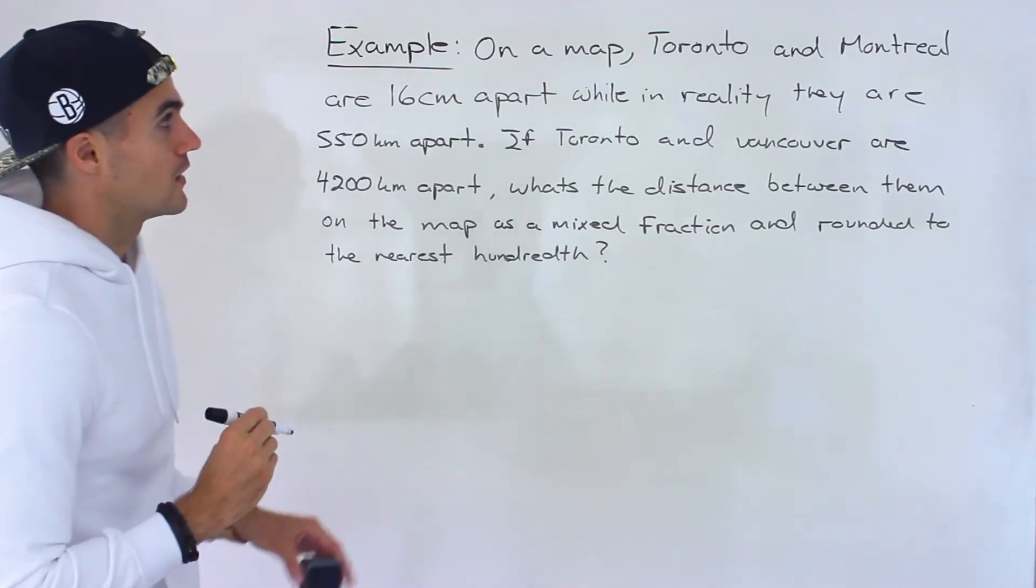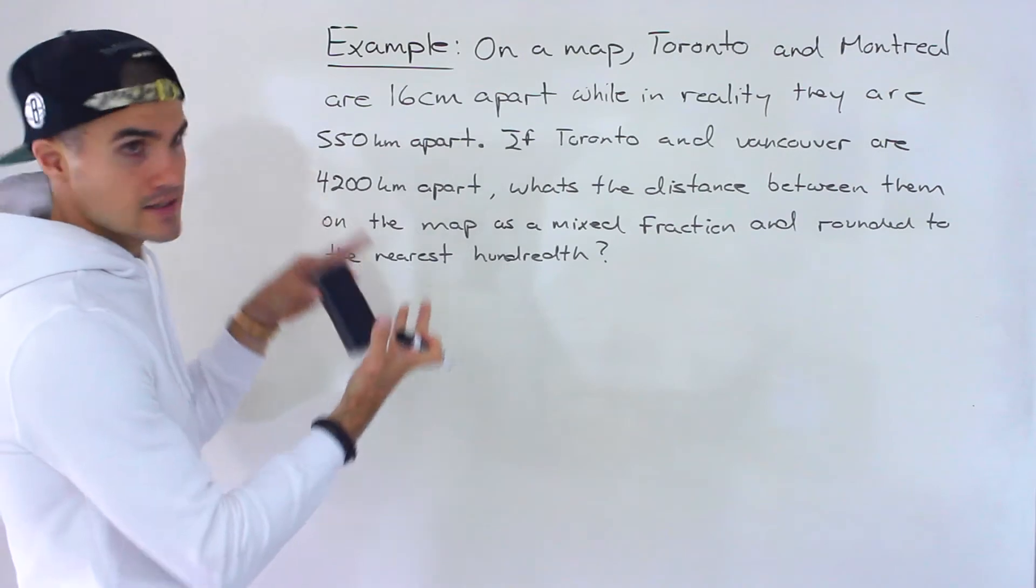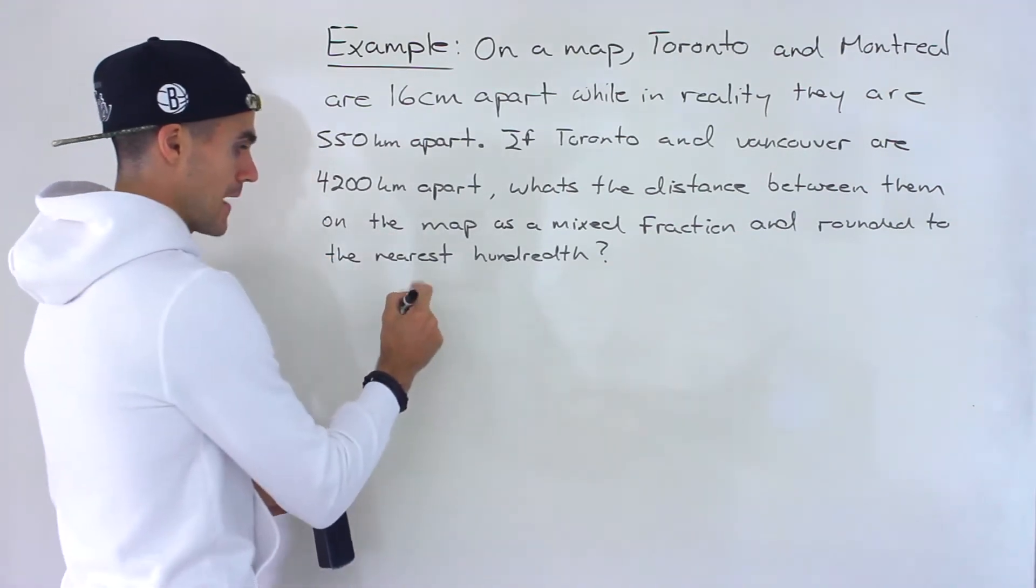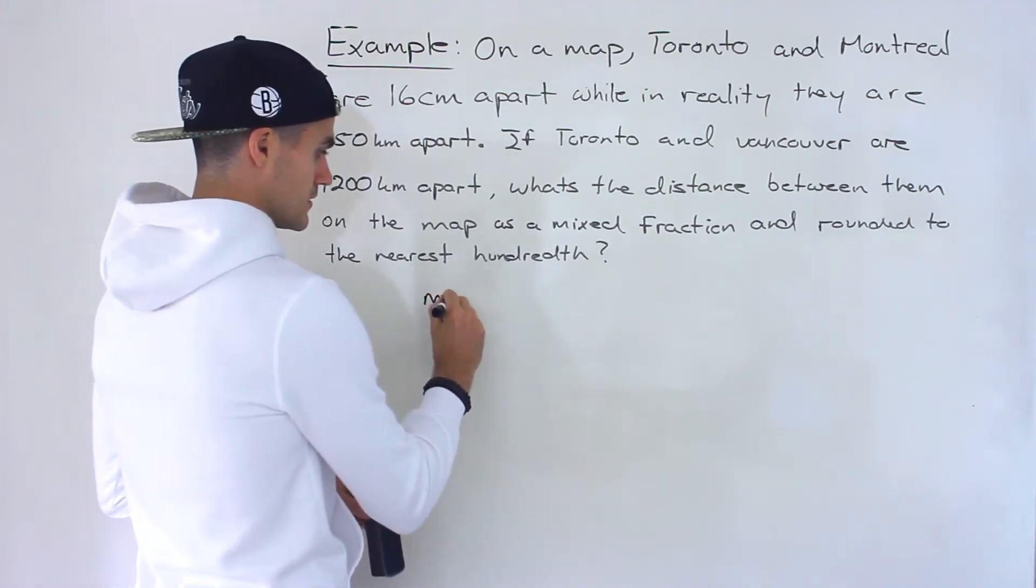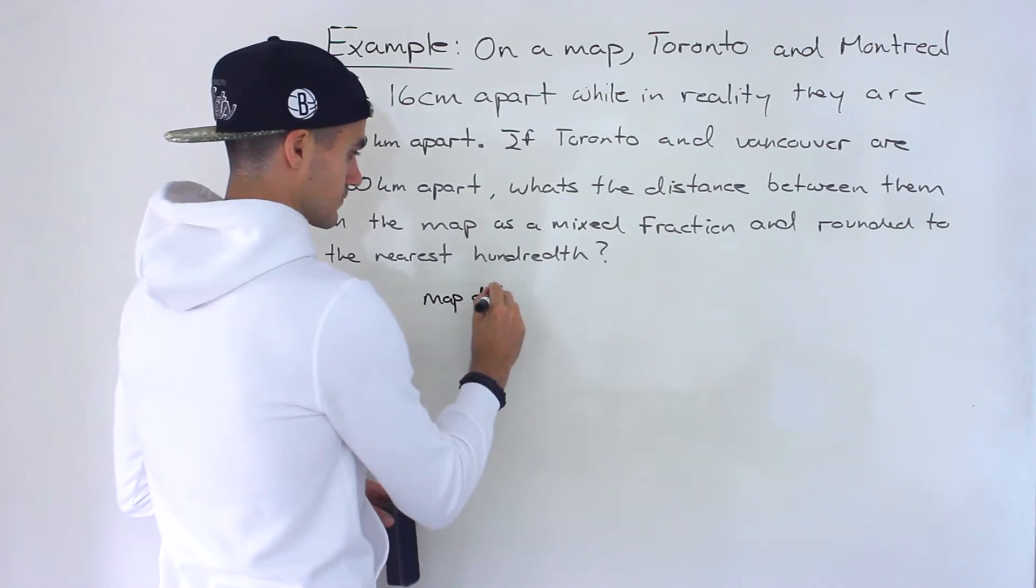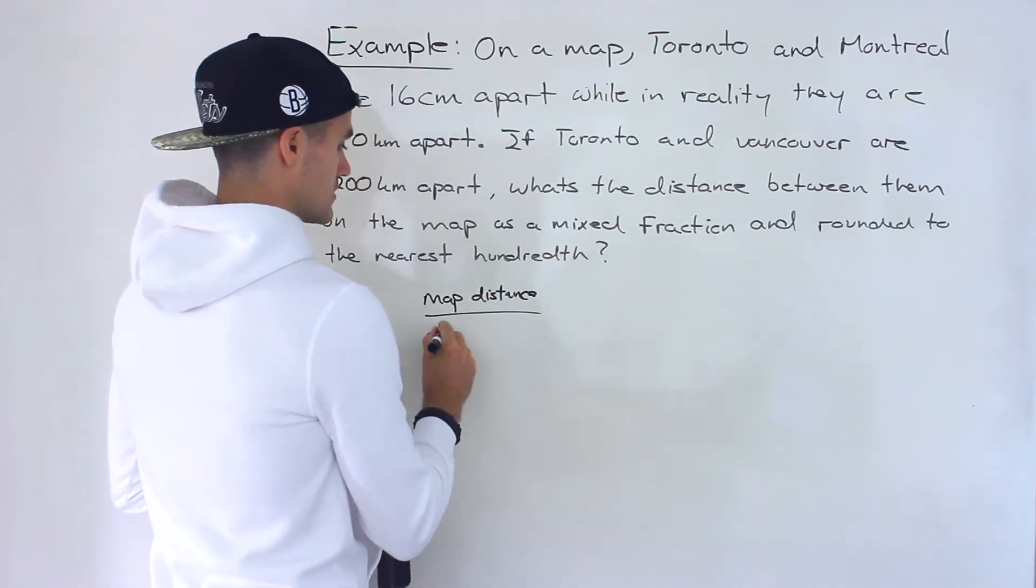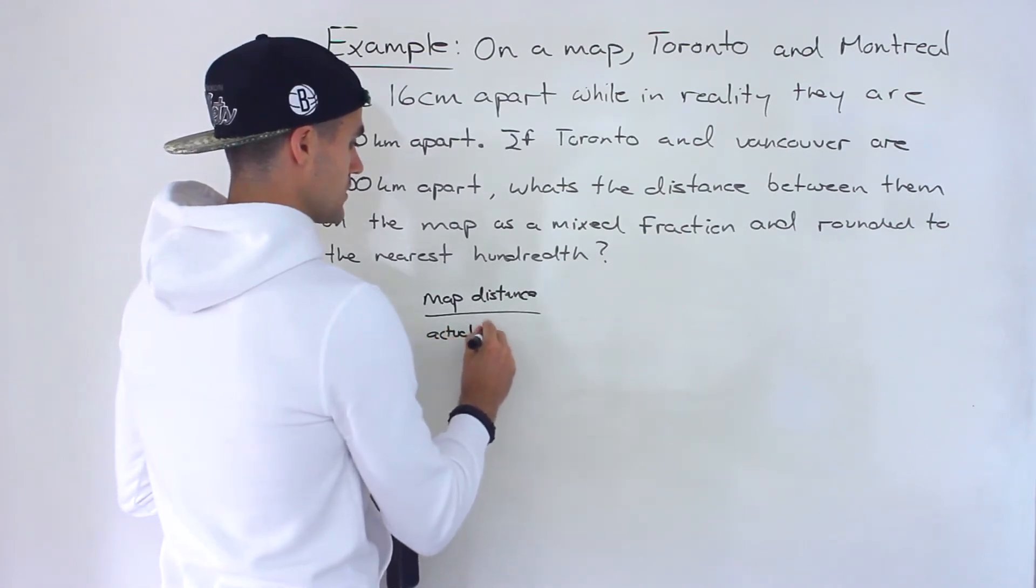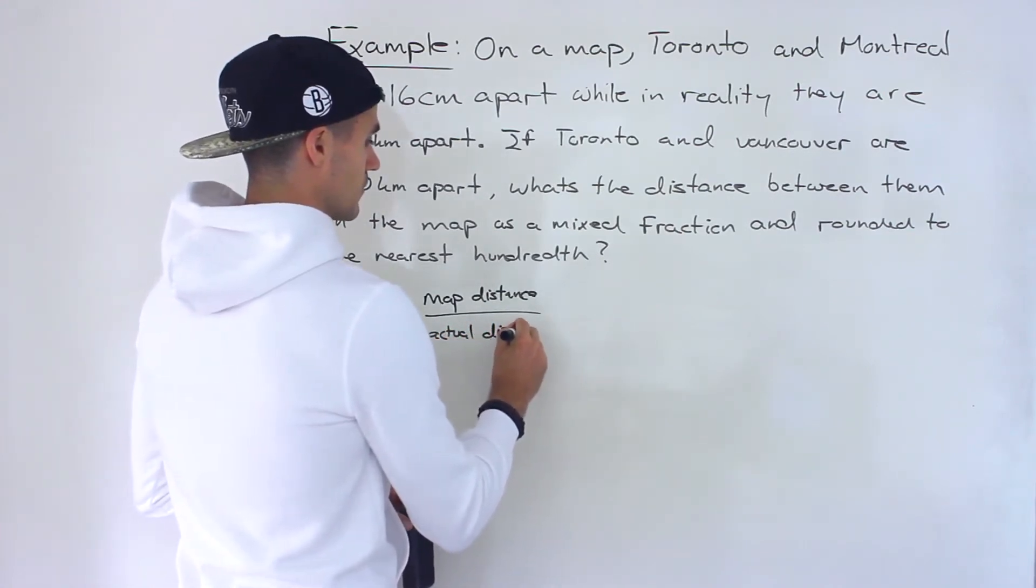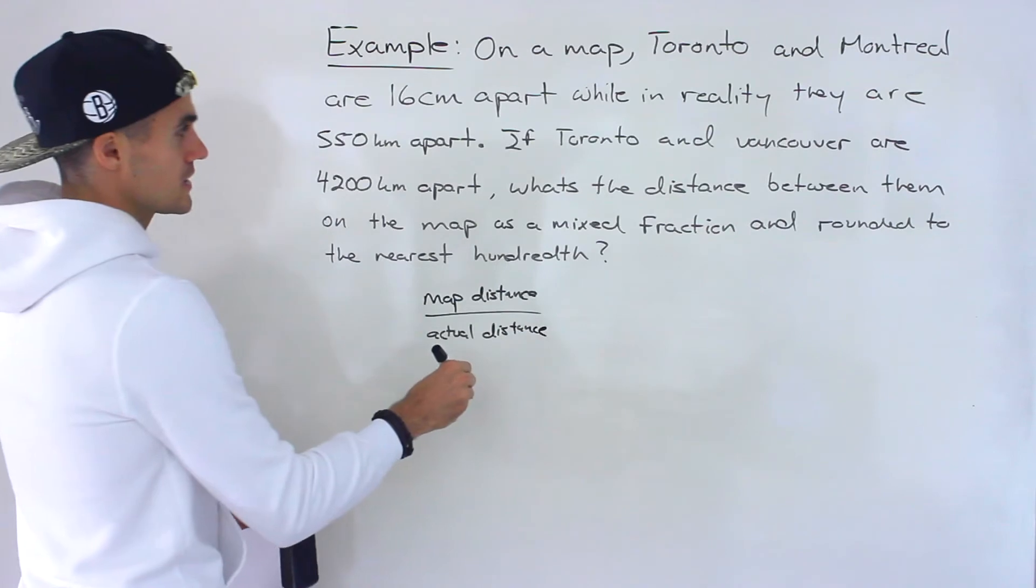So notice here we're given two kinds of distances: a map distance and an actual distance. So we can create a fraction here and this proportion is going to stay the same.